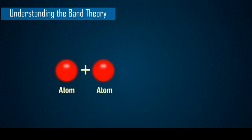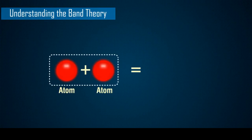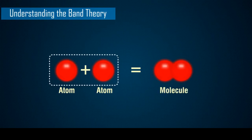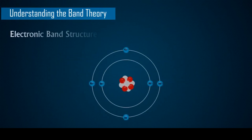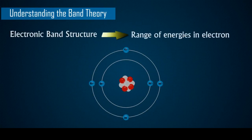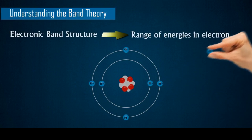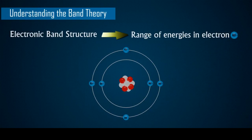When atoms come together to form a compound, their atomic orbital energies mix together to form molecular orbital energies. The electronic band structure of a matter describes the range of energies that an electron within the matter may have, and ranges of energy that it may not have.